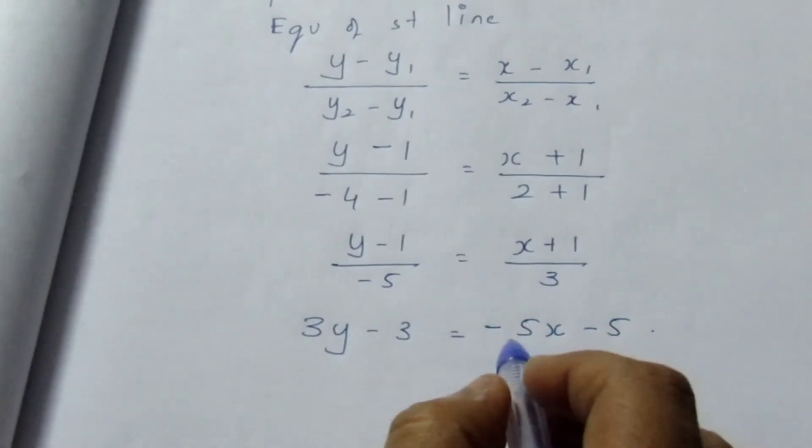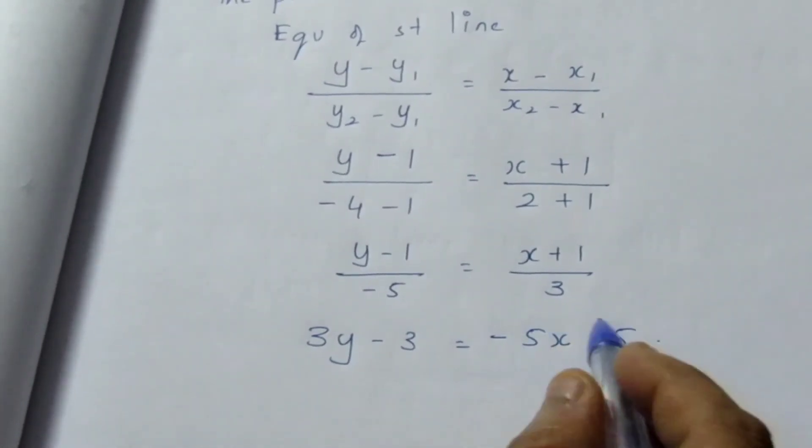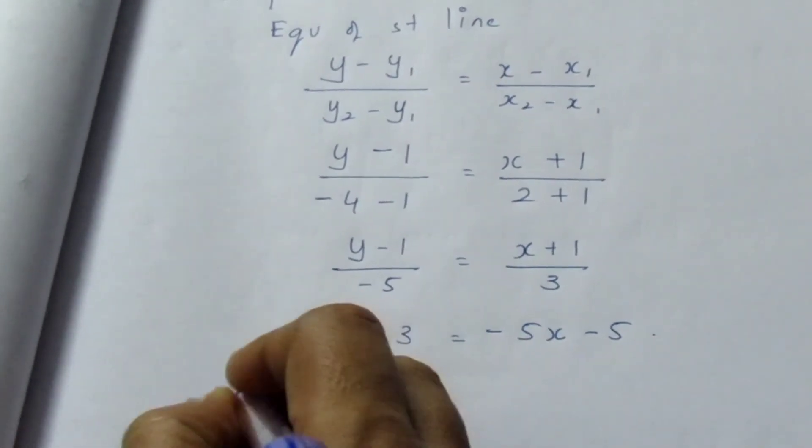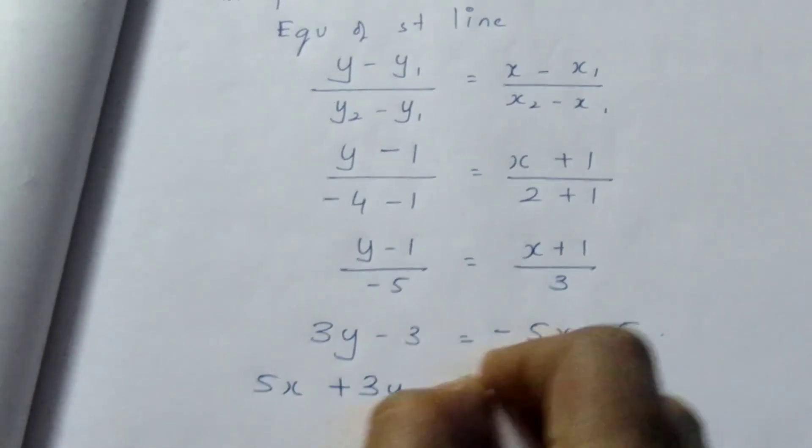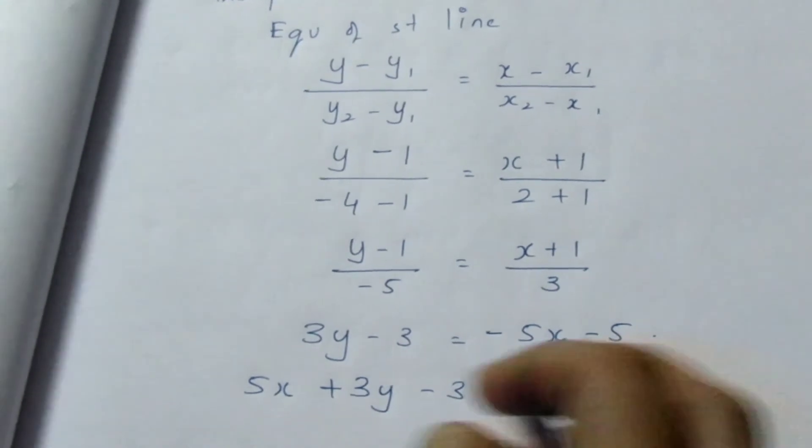Everything to one side. Always x should be positive, so I am bringing this to this side. Here it becomes 5x + 3y - 3 + 5 = 0.